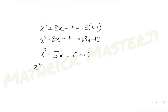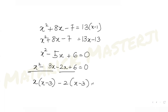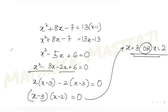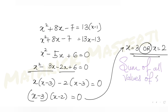This gives x squared plus 8x minus 7 equals 13(x minus 1), so x squared plus 8x minus 7 equals 13x minus 13, leading to x squared minus 5x plus 6 equals 0. Factoring: (x minus 3)(x minus 2) equals 0, so x equals 3 or x equals 2.